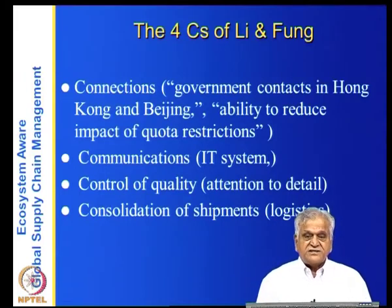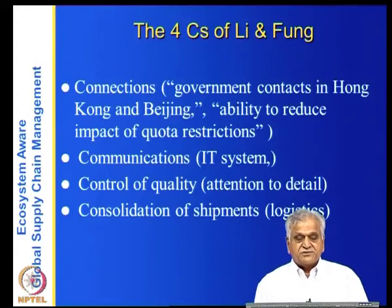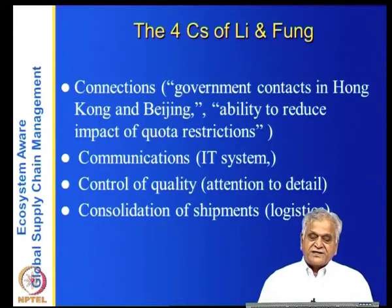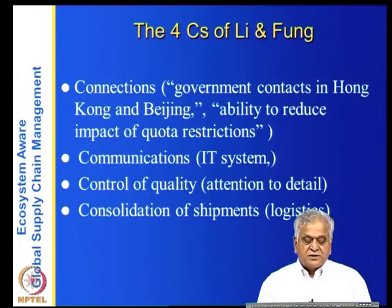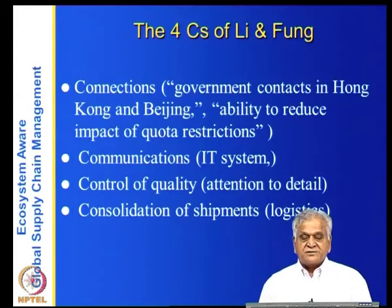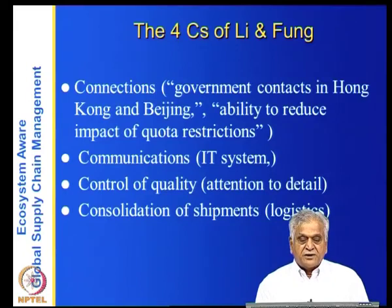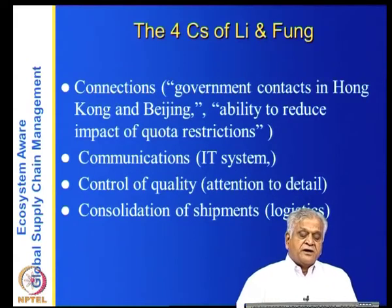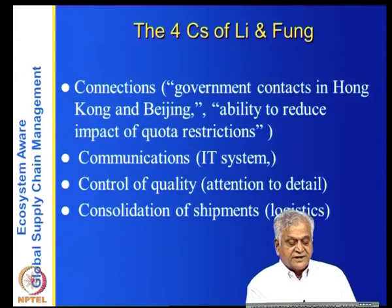If a single retailer tries to contact all of Li and Fung's suppliers individually, it may not achieve the scale needed for consolidation into multiple containers, and transportation costs would be higher. Consolidation of shipments is therefore a key advantage. The four C's are: connections, communications, control of quality and attention to detail, and consolidation of shipments — which is the logistics strength.